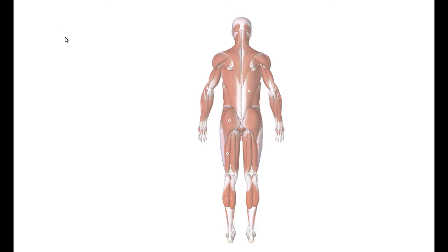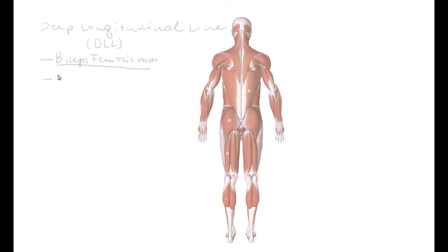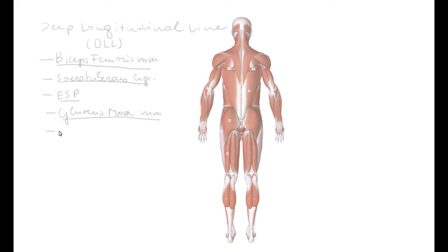The next system is called the Deep Longitudinal Line, DLL in short. The Deep Longitudinal Line consists of biceps femoris, the sacrotuberous ligament on the same side, the erector spinae muscle group (ESP in short), gluteus maximus on the same side, as well as latissimus dorsi on the opposite side.